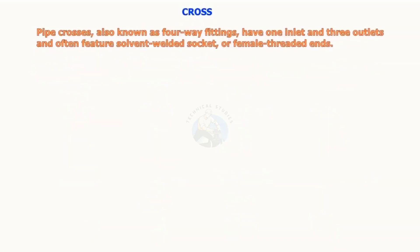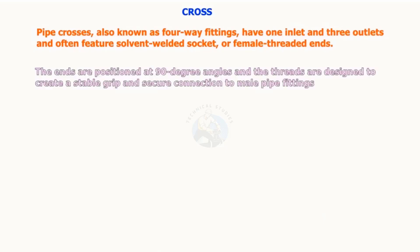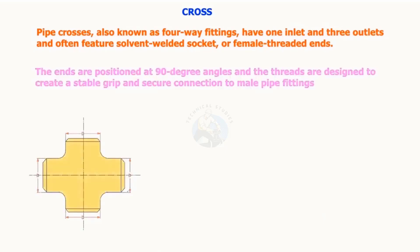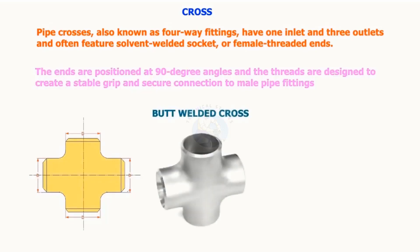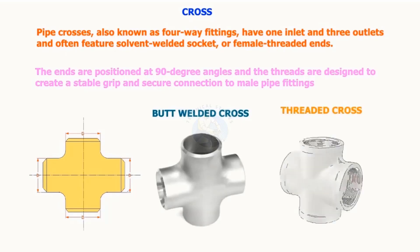Pipe crosses, also known as four-way fittings, have one inlet and three outlets and often feature solvent welded socket or female threaded ends. The ends are positioned at 90-degree angles, and the threads are designed to create a stable grip and secure connection to the male pipe fittings.